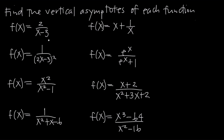We're going to start with this first problem. The function is f equals 2 divided by x minus 3. A vertical asymptote is going to exist for a rational function wherever the denominator is equal to 0, if it can be equal to 0. So what you want to do is take the denominator and set it equal to 0. In this case, we're going to have x minus 3 equal to 0. If we add 3 to both sides, we get x equals positive 3. So this is the value that makes the denominator 0.